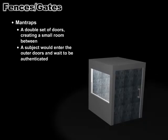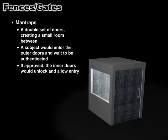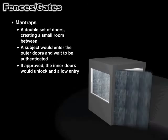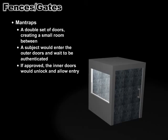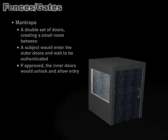If the subject is authenticated, the inner doors would unlock and you could proceed on in. If the subject is not authenticated — if he's denied — then you can either unlock the outer doors and let him leave, or you could actually lock both doors and wait until a security guard or some other escort arrives to escort the person to the appropriate point of exit.